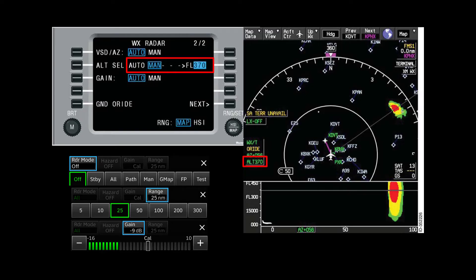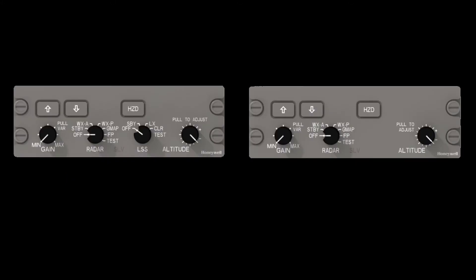Other aircraft may have soft controls, where the mode and altitude slices are on an integrated control panel. On these panels, we use the knob on the right labeled altitude, pull the knob out, and then select the desired altitude slice.